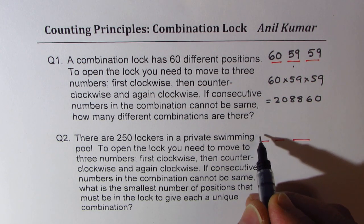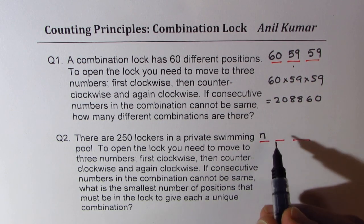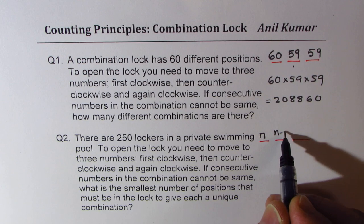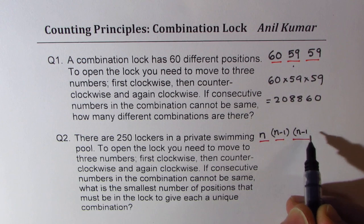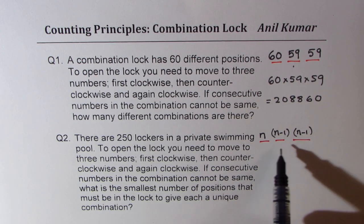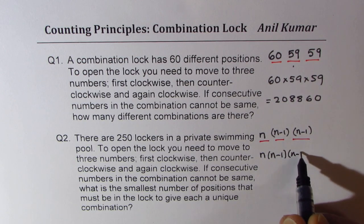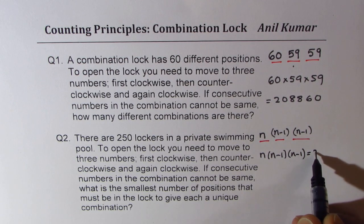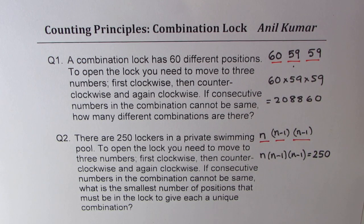Let us say the number of positions is n. In that case we have n combinations for the first position. Since consecutive cannot be the same, the second is n minus 1, and the third position will also be n minus 1. So n times (n minus 1) times (n minus 1) should be equal to 250, since that is the number of locks we have and we need unique combinations.